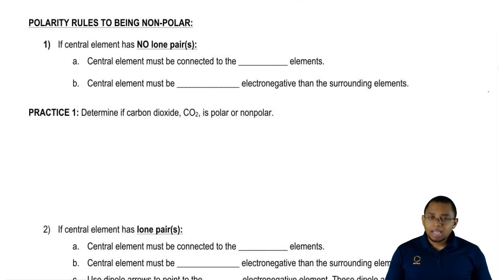For molecular compounds where the central element has no lone pairs, we're going to follow two rules. First, the central element must be connected to the same elements. That's rule number one. If it breaks that, it's automatically polar.